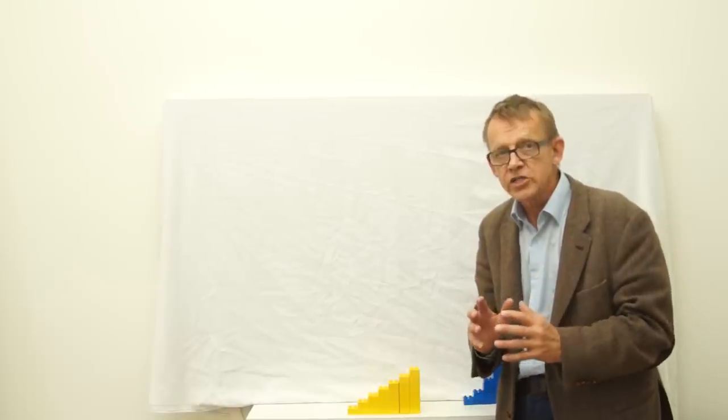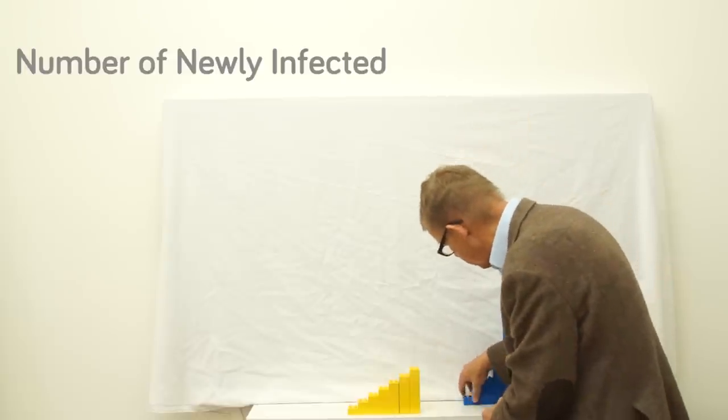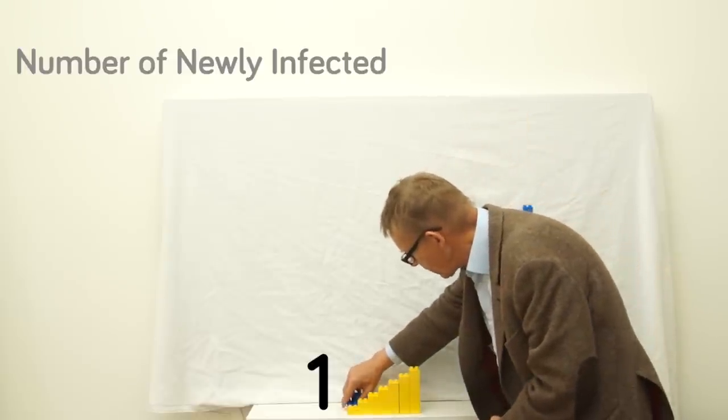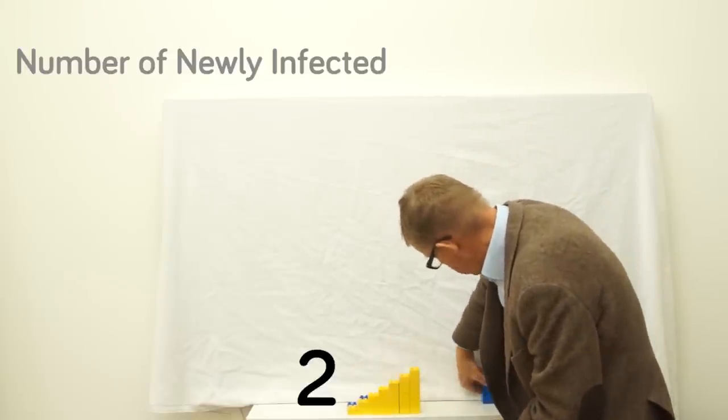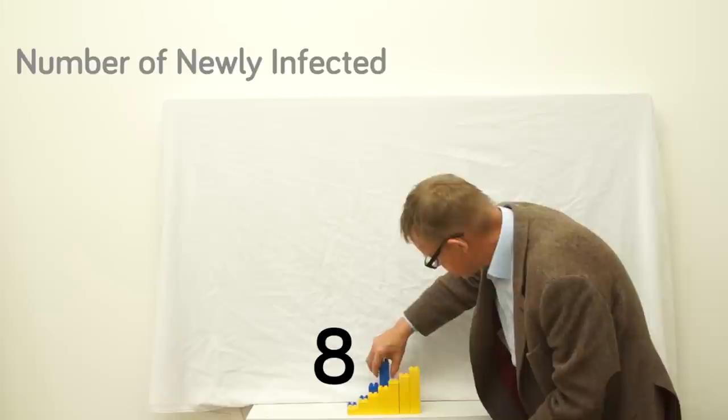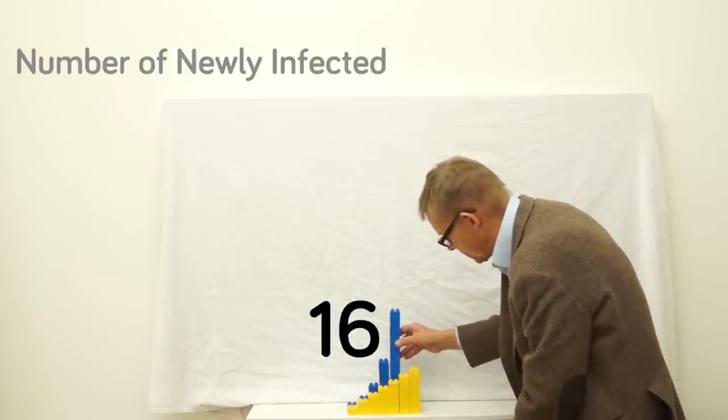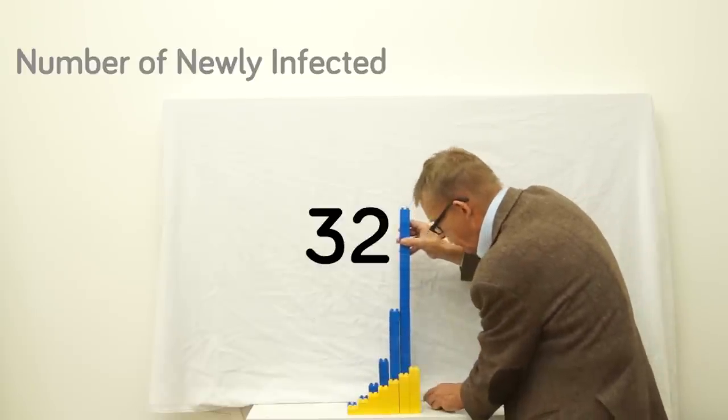When one patient infects two others, it doubles from month to month. So this is what will happen with Ebola: one, two, four, eight, sixteen, thirty-two.